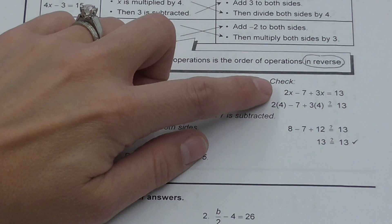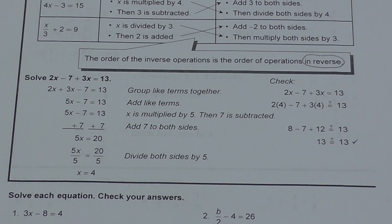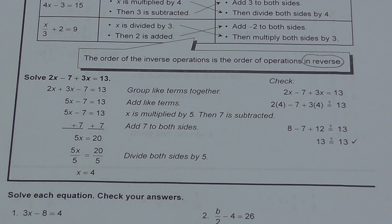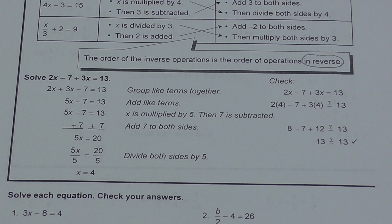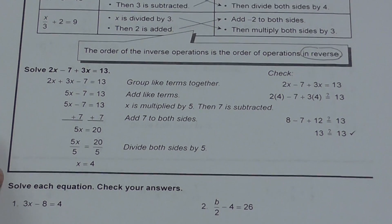Now you want to check your work, and this is really important. Go back to the original problem before you grouped anything or changed the order, and plug in 4 everywhere you saw x. So: 2 times 4 minus 7 plus 3 times 4 — does that equal 13? 2 times 4 is 8, minus 7, plus 3 times 4 is 12. So 8 minus 7 plus 12 — sure enough, it does equal 13.